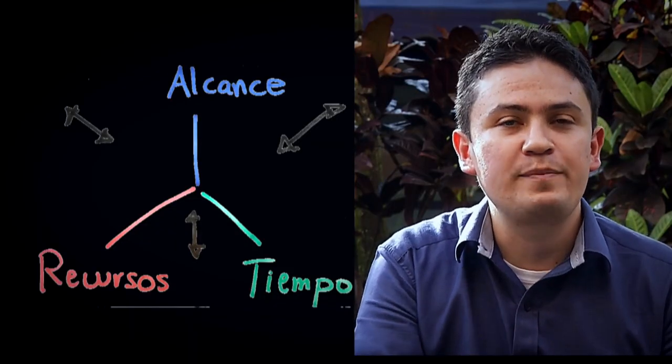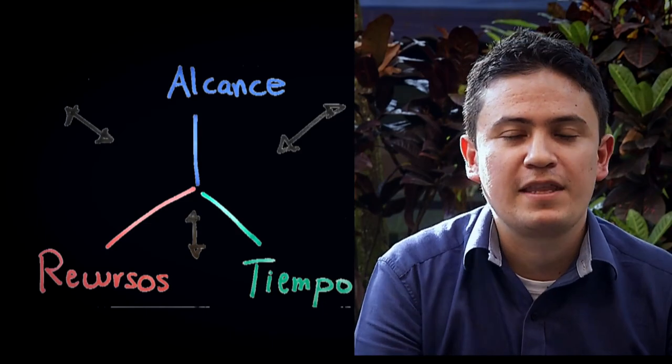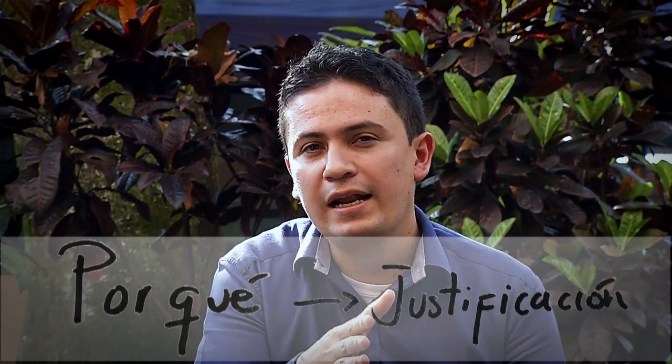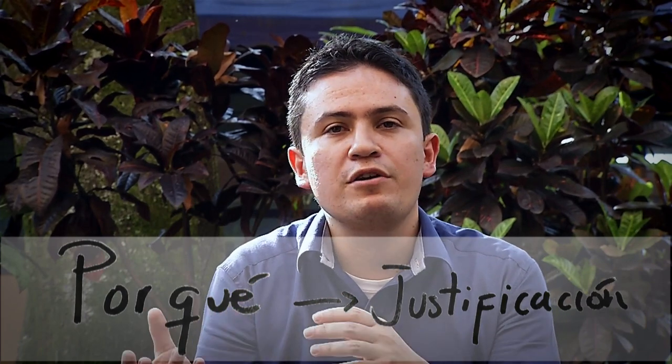Cuando tenga claros estos tres aspectos, voy a responder seis preguntas. La primera: el qué. Este se relaciona con el alcance; debe ser un alcance real, que se pueda alcanzar, desarrollar con facilidad y que se pueda demostrar. El por qué debe ser la justificación; debo demostrarle al evaluador que los pasos que voy a seguir me van a permitir realizar el alcance del proyecto y que este tiene un objetivo claro que va a mejorar el estado del arte, la sociedad, y justificar la inversión.